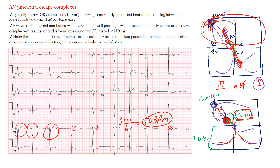These escape beats are seen in severe sinus node dysfunction — where the sinus node is out — or when there's high-degree AV block. Importantly, they occur late: the AV junction waits and waits, and only fires if no sinus impulse arrives. These are escape beats, not premature beats — they are later beats, not early ones.